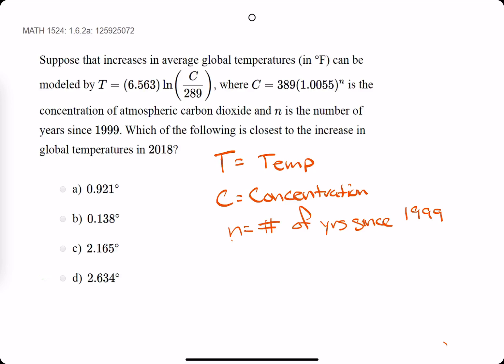Okay, so let's see, they say closest to increasing global temps in 2018. So 2018, that's probably a good place to start. So 2018 is not going to be our N value, but rather our N value is the number of years since 1999. So the N value that would represent 2018 would actually be 19 because 2018 is 19 years since 1999. So our N value is 19.